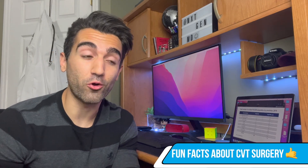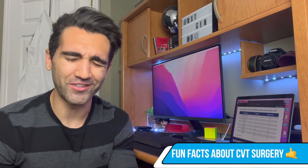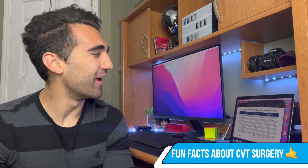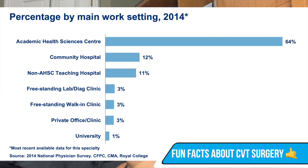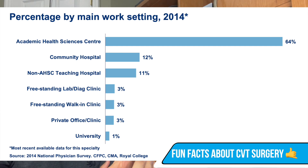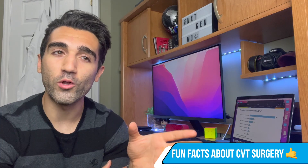Some quick fun facts about cardiovascular and thoracic surgery: CVT surgeons are pretty rare in the general population — per 100,000 people in Canada there is approximately one CVT surgeon. Typically you'll find them working in academic health science centers, about 64% of them spend their time there. They also do work in community hospitals, non-academic teaching hospitals, freestanding diagnostic clinics, walk-in clinics, private offices, and universities.